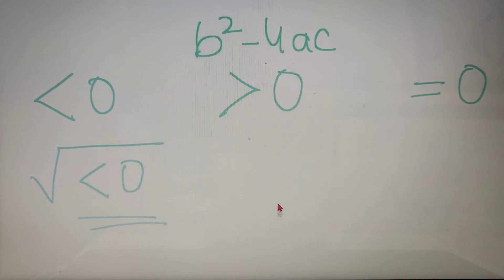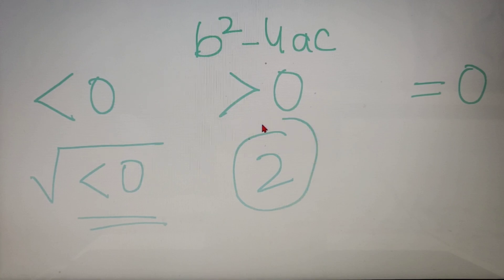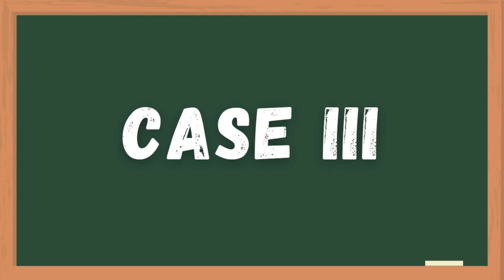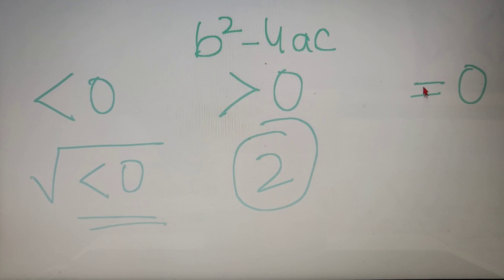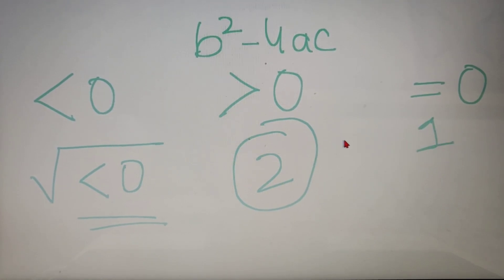For the second case, when b² − 4ac is greater than 0, we will get two real solutions and both solutions will be different or distinct from each other. For the third and final case, when b² − 4ac is equal to 0, we will get only one real solution and the value of that root will be equal to −b / 2a.